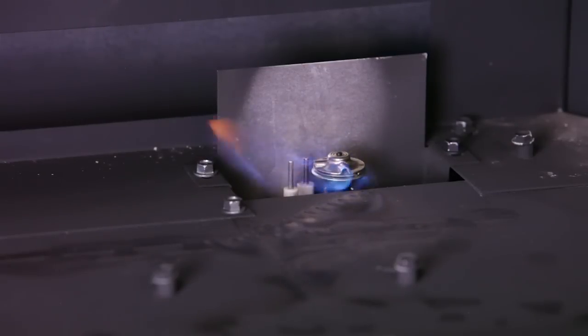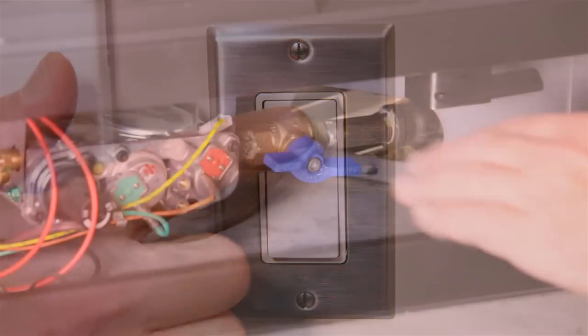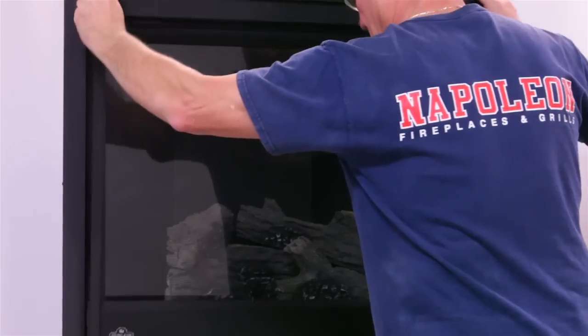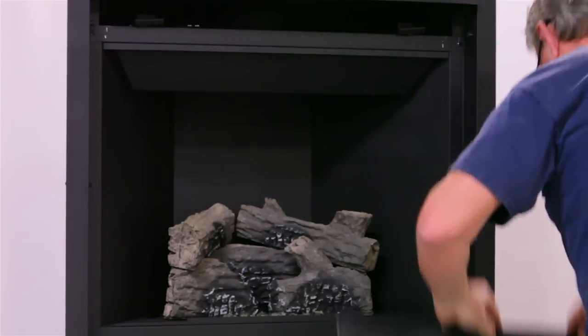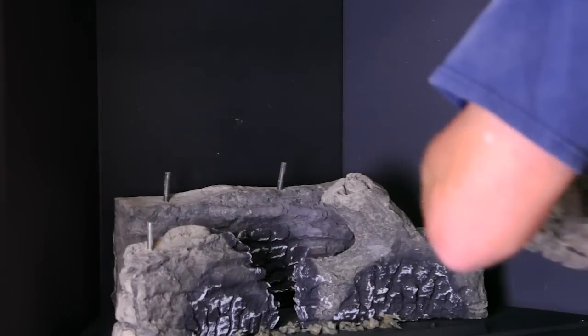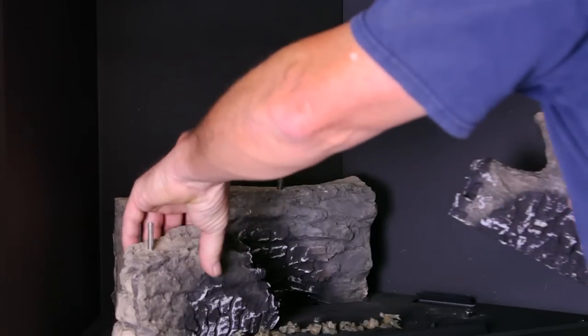Turn off the electricity and gas supply to the fireplace. Remove any trims, open or remove the main viewing door, and remove the log set or glass media to access the pilot area. For these details, refer to your owner's manual.